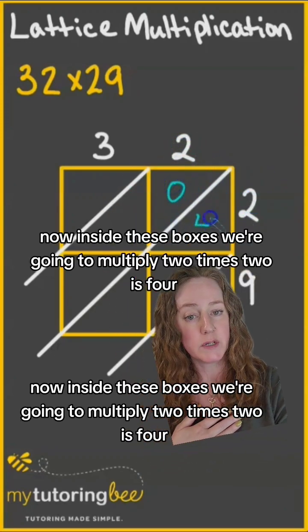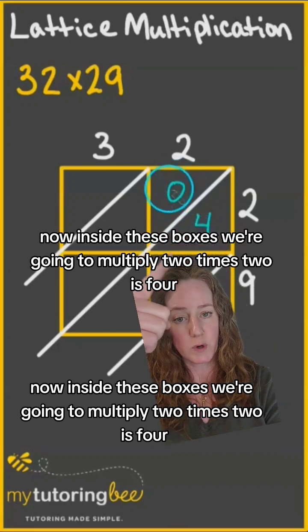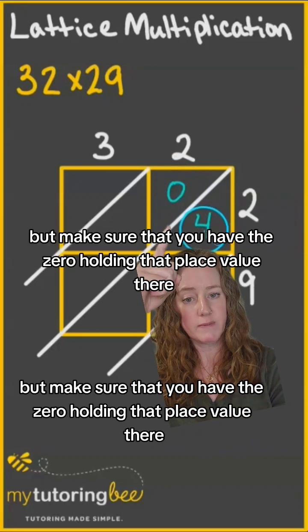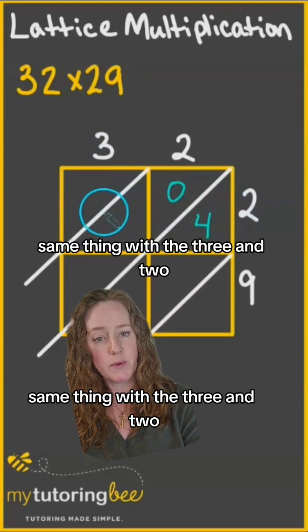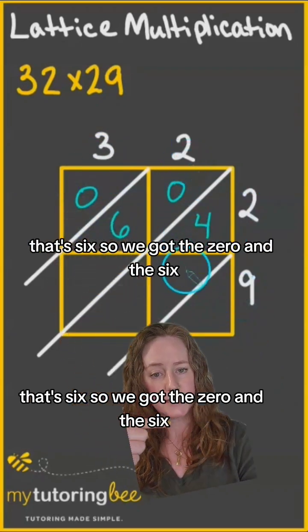Now inside these boxes we're going to multiply. 2 times 2 is 4, so we're going to put it in this section, but make sure that you have the 0 holding that place value there and you've got the 4 here. Same thing with the 3 and 2. That's 6, so we've got the 0 and the 6.